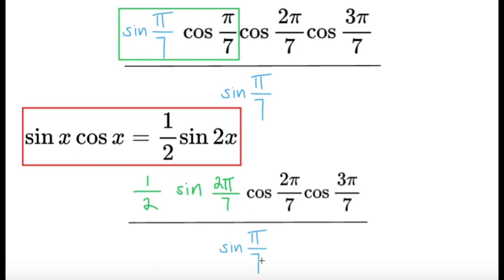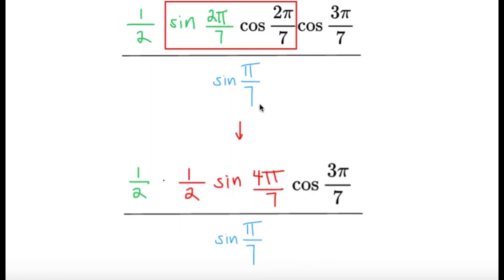And then we can actually observe again that there is another part that looks like the double angle identity, the sine two pi over seven, cosine two pi over seven. And exactly the same thing, we're going to do it again. We're going to use our double angle identity here to make this sine two pi over seven, cosine two pi over seven. We're going to write it as one half sine four pi over seven, as you can see here.